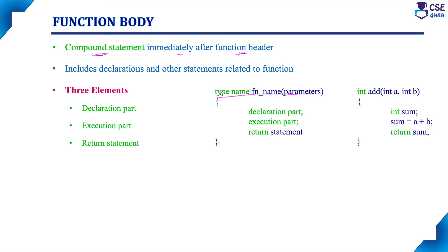The function body comes right after the function header — we need to open the curly brace, and within that curly brace we specify the function body. The function body has three elements: the declaration part, the execution part, and the return statement. For example, within the curly brace, 'int sum' is the declaration part. If you want to declare one more variable, you can add it on the next line.